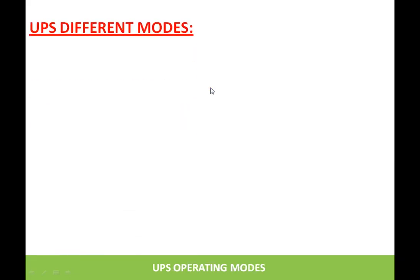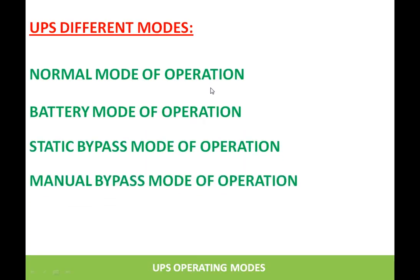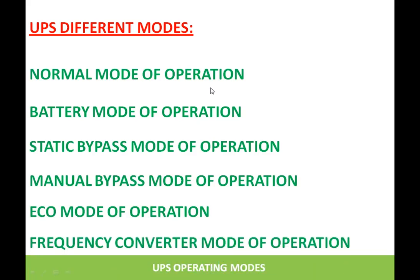These are the different modes of UPS: normal mode, battery mode, static bypass mode, manual bypass mode, echo mode, and frequency converter mode. It may be noted that all these modes may not be present in a single UPS. Depending upon the user requirement, the model of the UPS needs to be selected so that the required mode of operation is present in that particular UPS model.